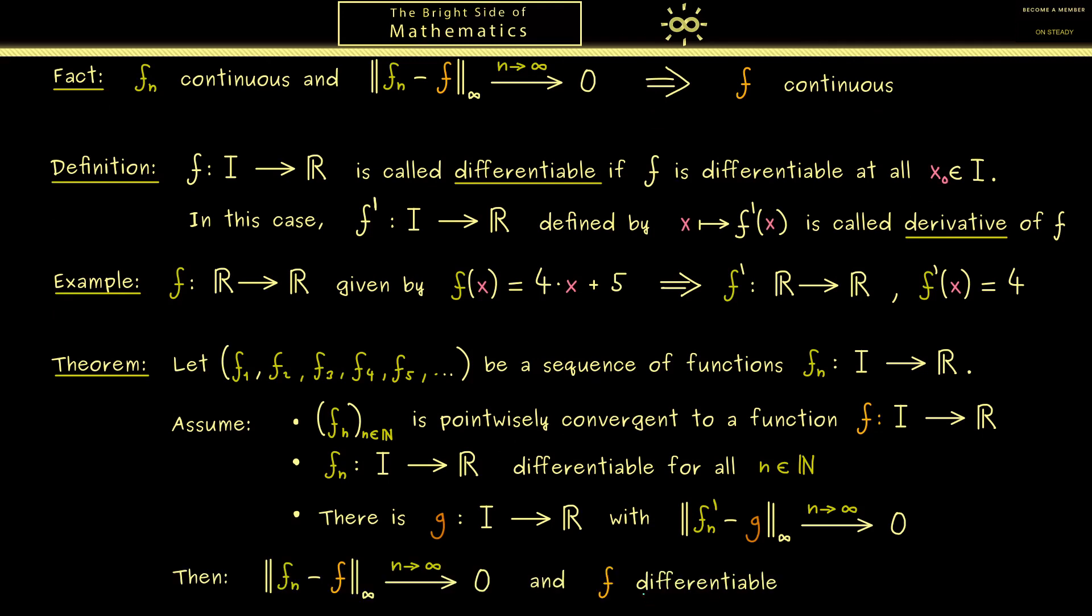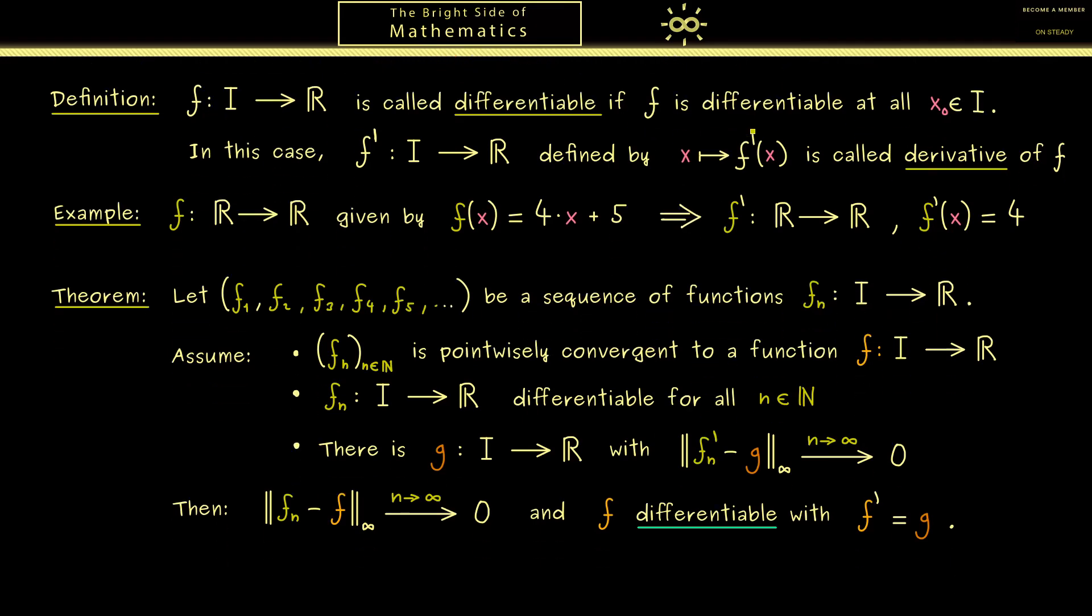However, more importantly, we also have that the limit function f is differentiable as well, and when we calculate the derivative we get the function g. So you see this is the whole theorem and it's very nice because it tells us that under these conditions, differentiability is conserved. Therefore let's use the next minutes to prove this theorem.